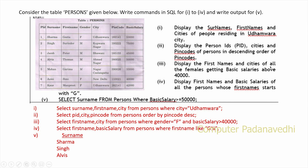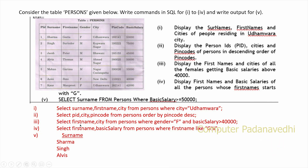Display the first name and cities of all female persons with a basic salary above $40,000: SELECT first_name, city FROM person WHERE gender = 'Female' AND basic_salary > 40000.